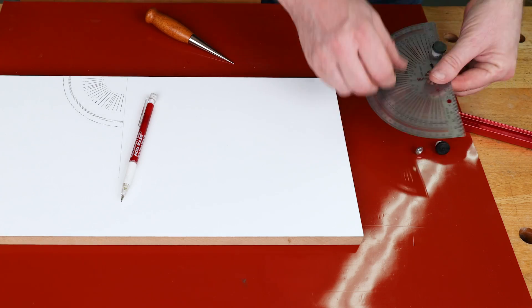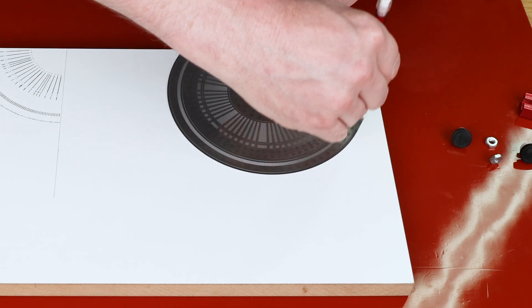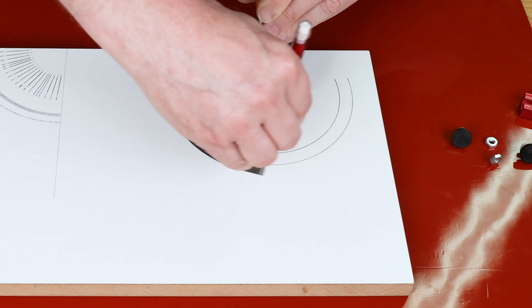Also we can remove it off the T-bar and set it up for doing precision circles. We have a ruler on the back edge here.